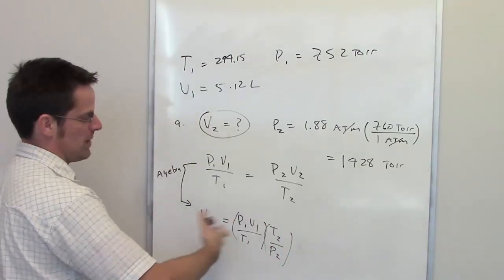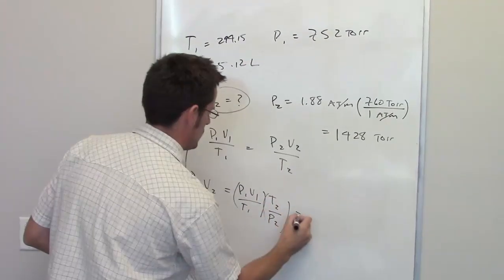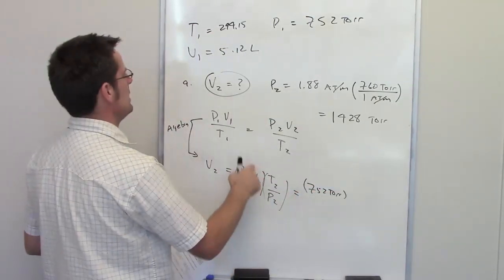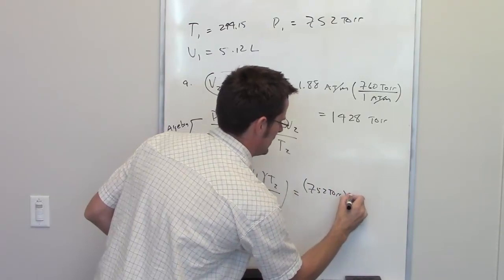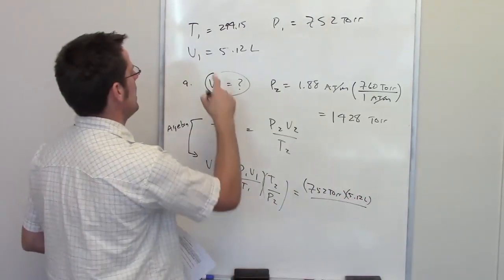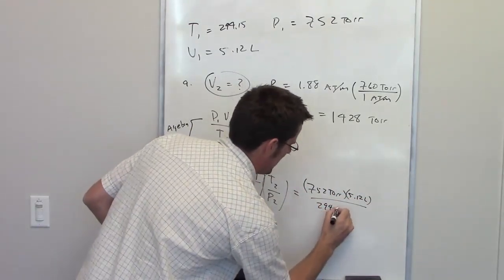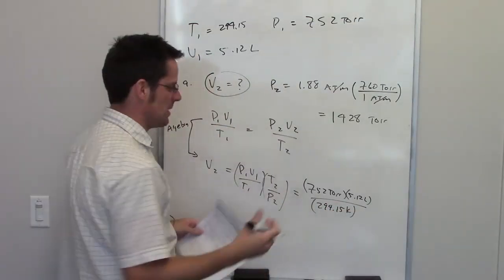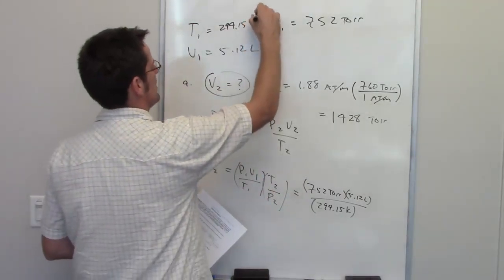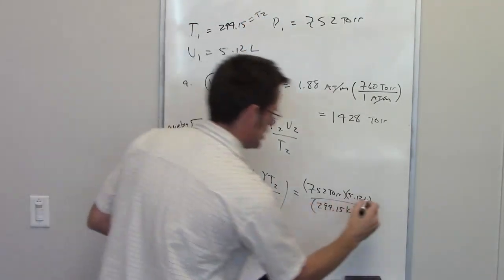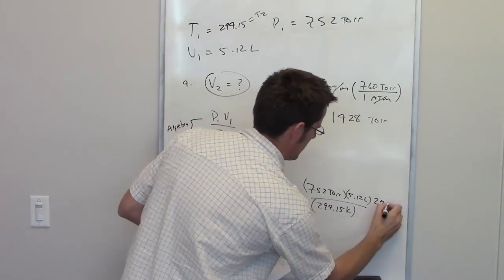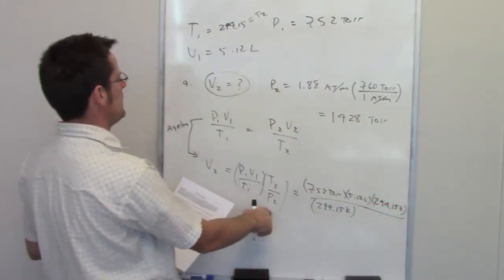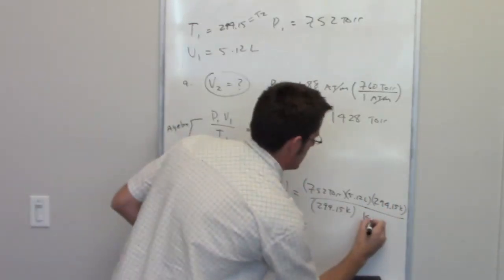Now for the remainder, all I have to do is throw in each of these values. So for P1, I've got 752 Tor. For V1, I've got 5.12 liters. For T1, I've got 294.15 kelvins. Now for T2, the problem tells me that the temperature is held constant. So T2 and T1 are the same. So I can go ahead and write down T2 as being 294.15 kelvins. And for P2, it's 1428 Tor.